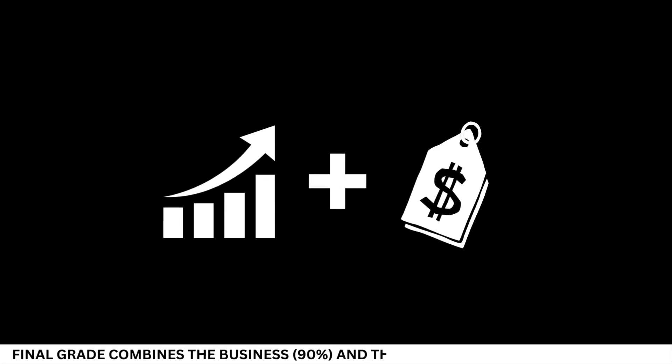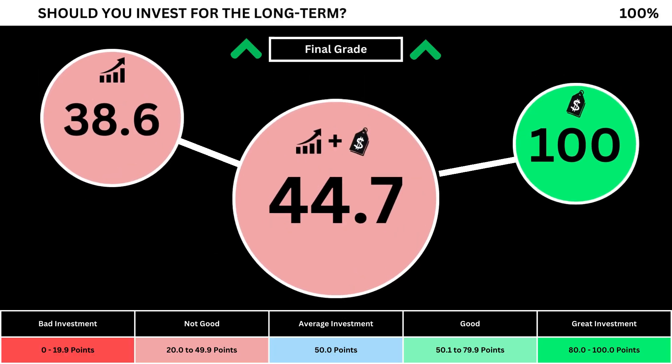Finally, we can put everything together to get the company's final grade. Adding the business grade and the fair price grade, we can see the company's final grade. Anything less than 50 means it's not a good long-term investment; a final grade above 50 means it would make a good long-term investment if you bought the stock right now. Invest wisely, and as always, take care of your money.